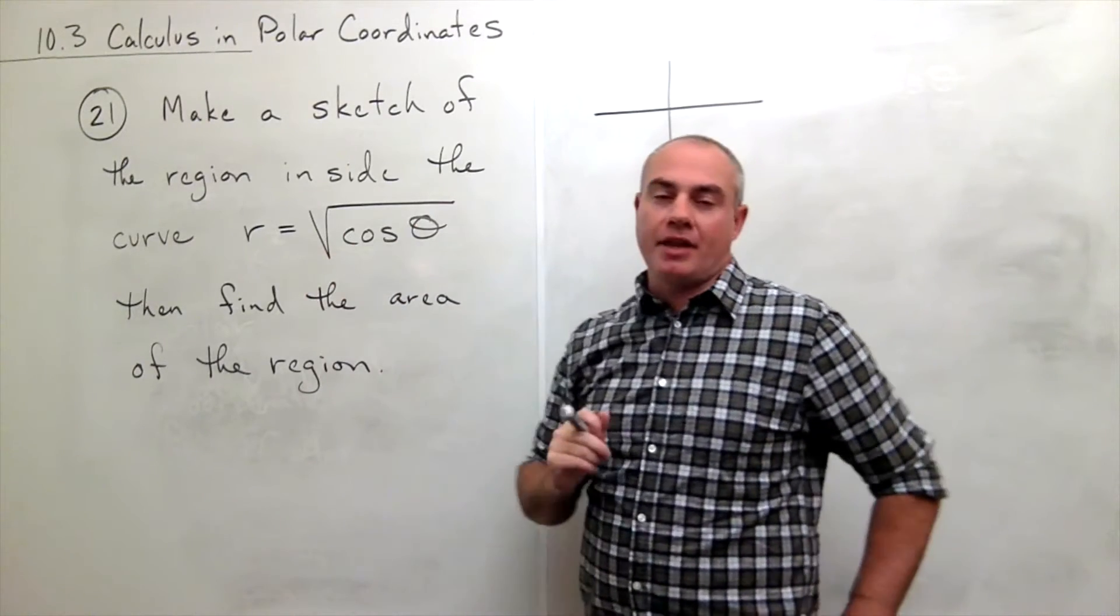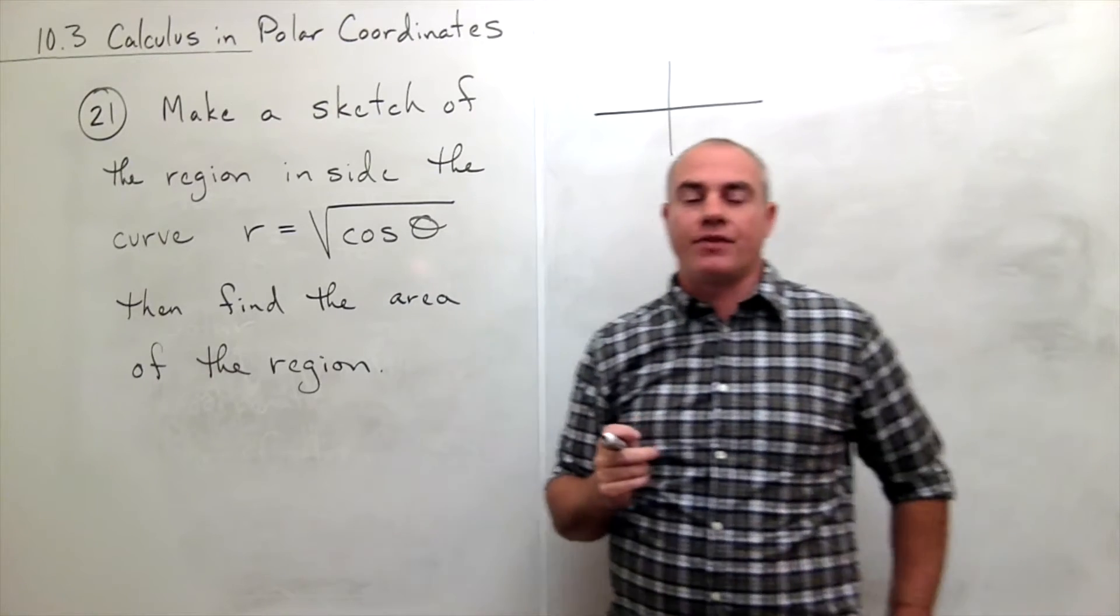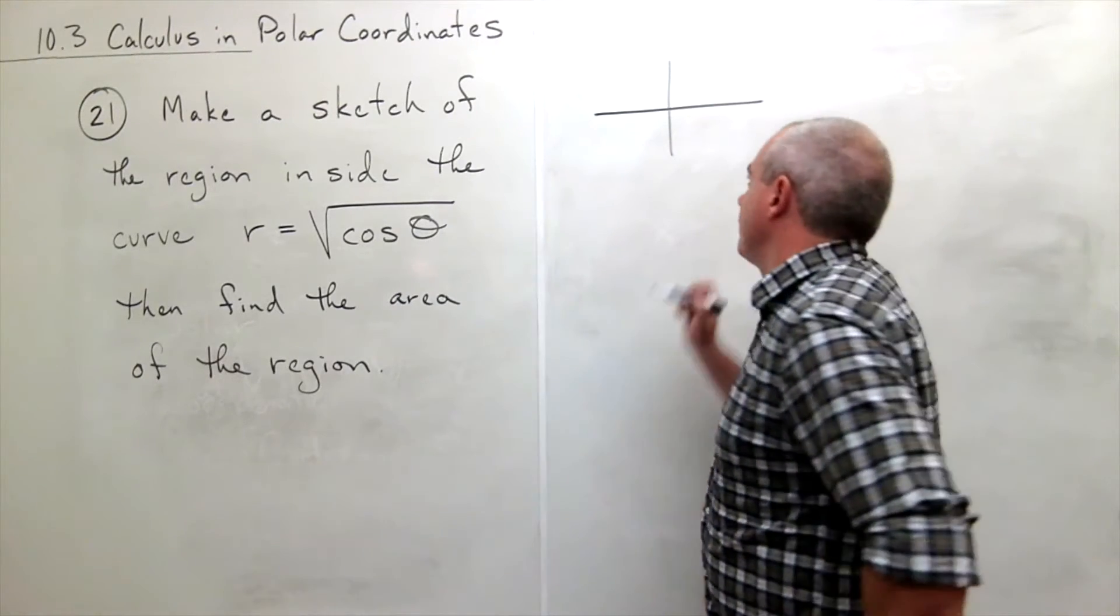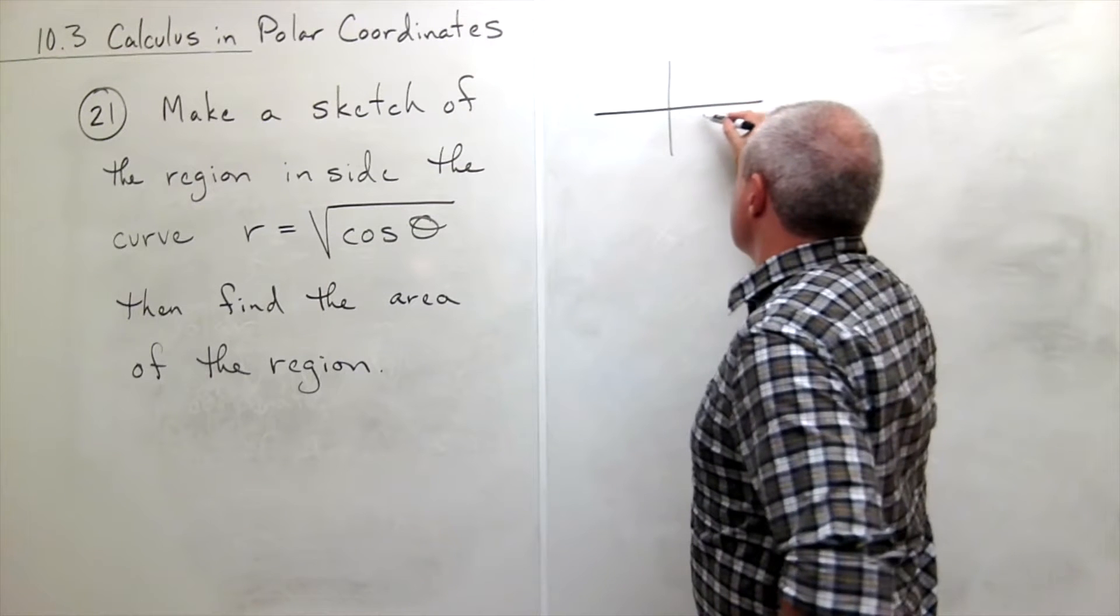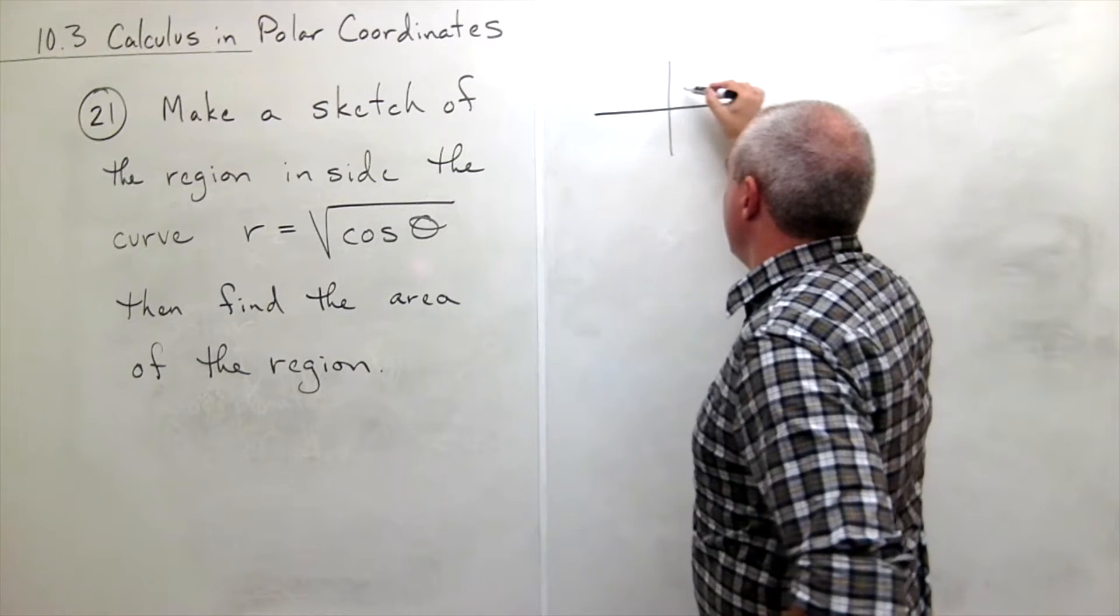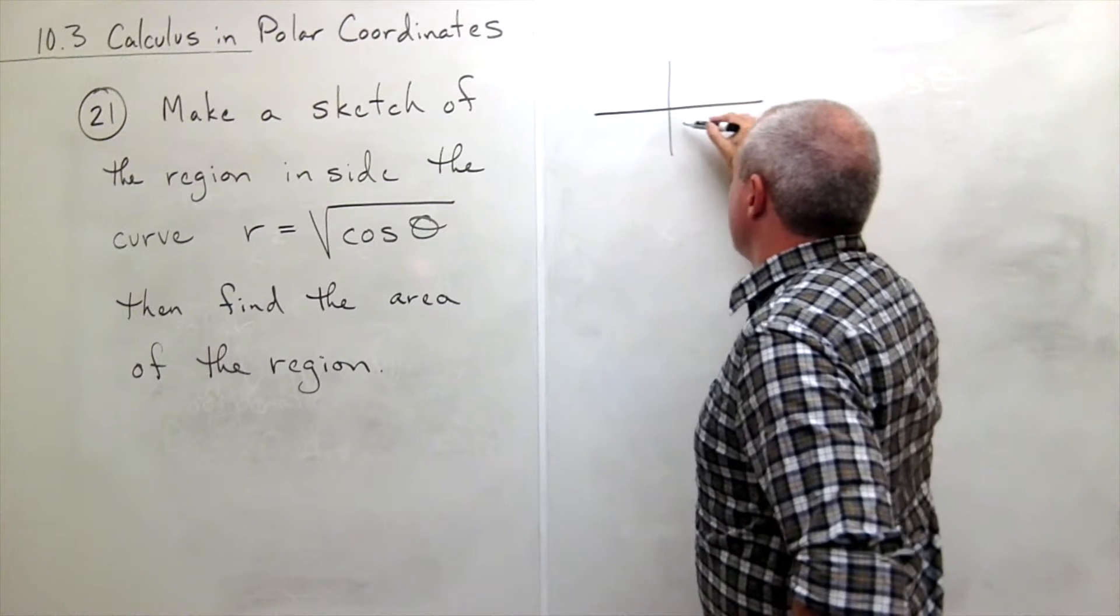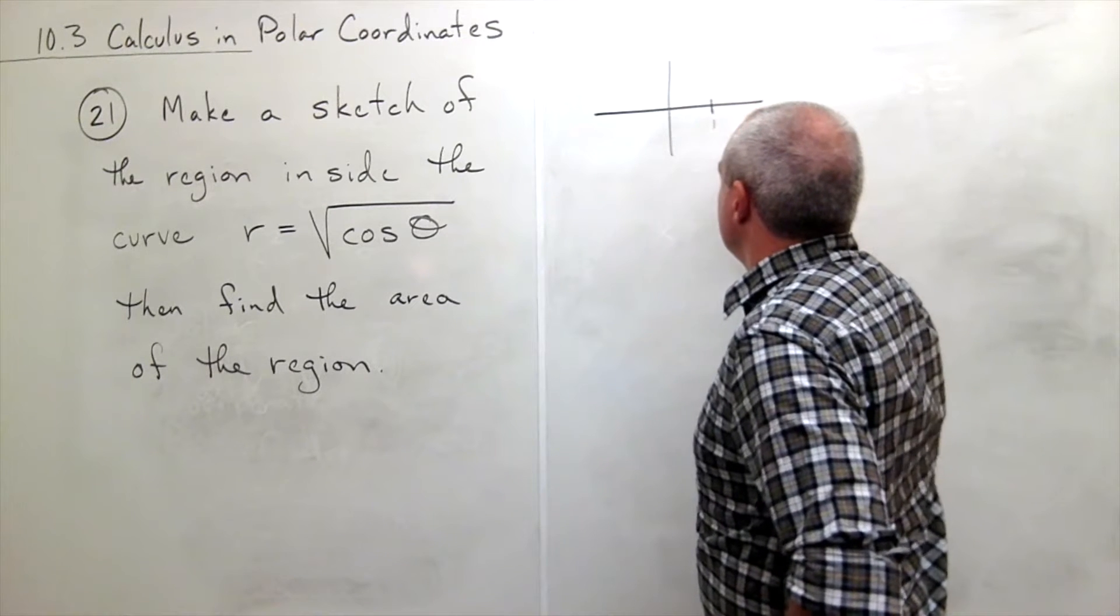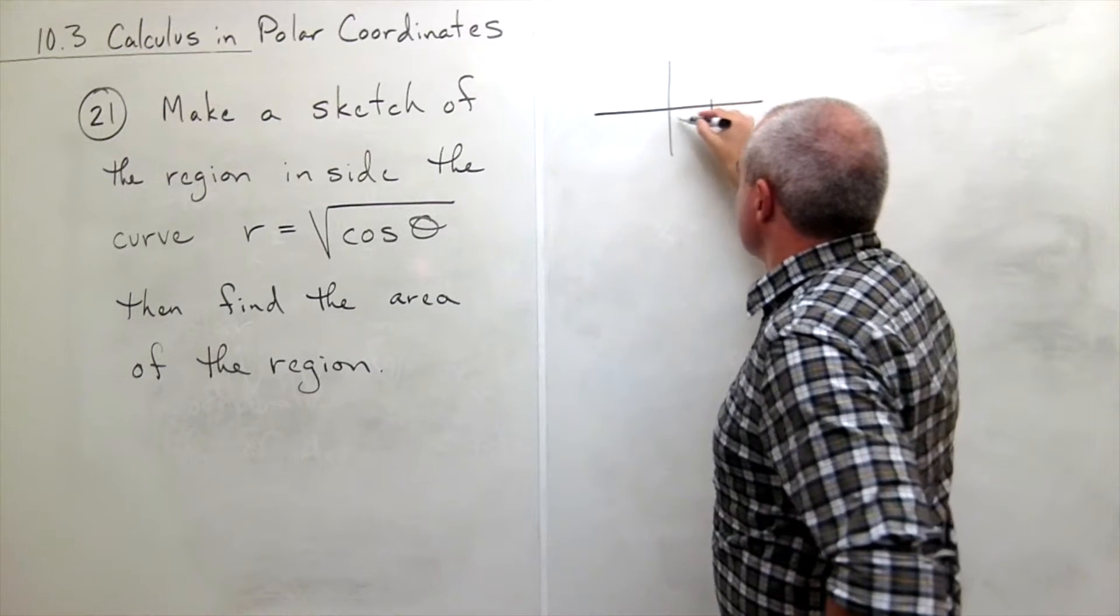I'd have r equals cosine theta. And r equals cosine theta we know is just a circle of diameter one, sitting out here on the x-axis. So let's say that this is one; then it would just be a circle of diameter one sitting here.